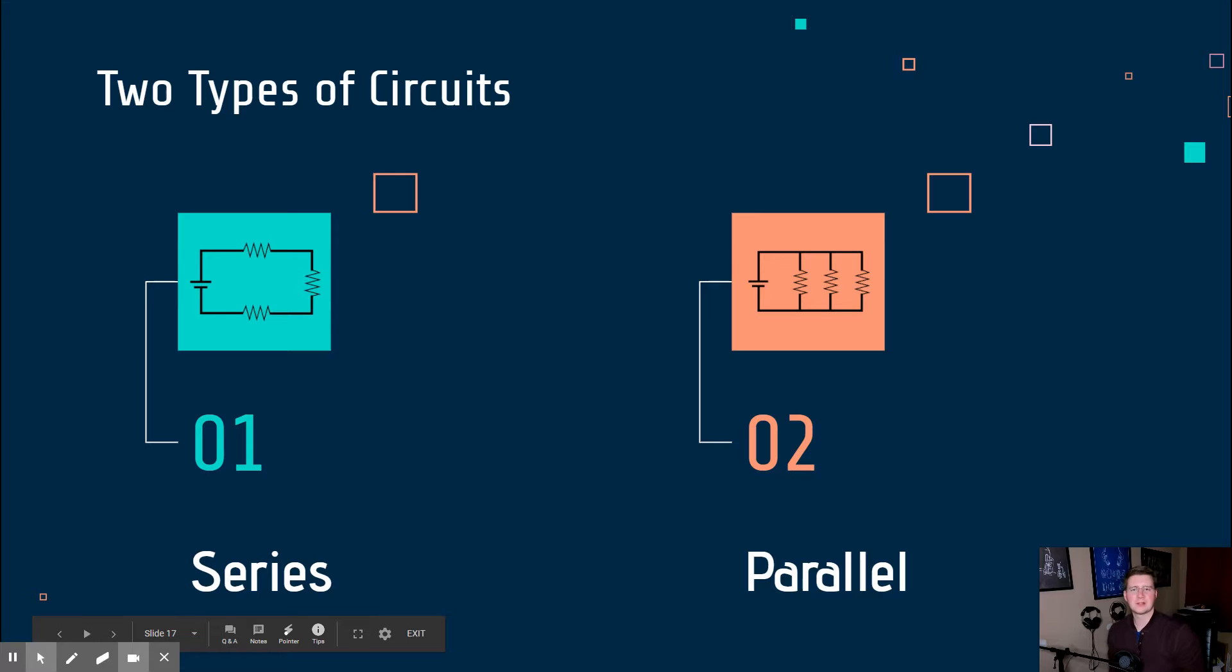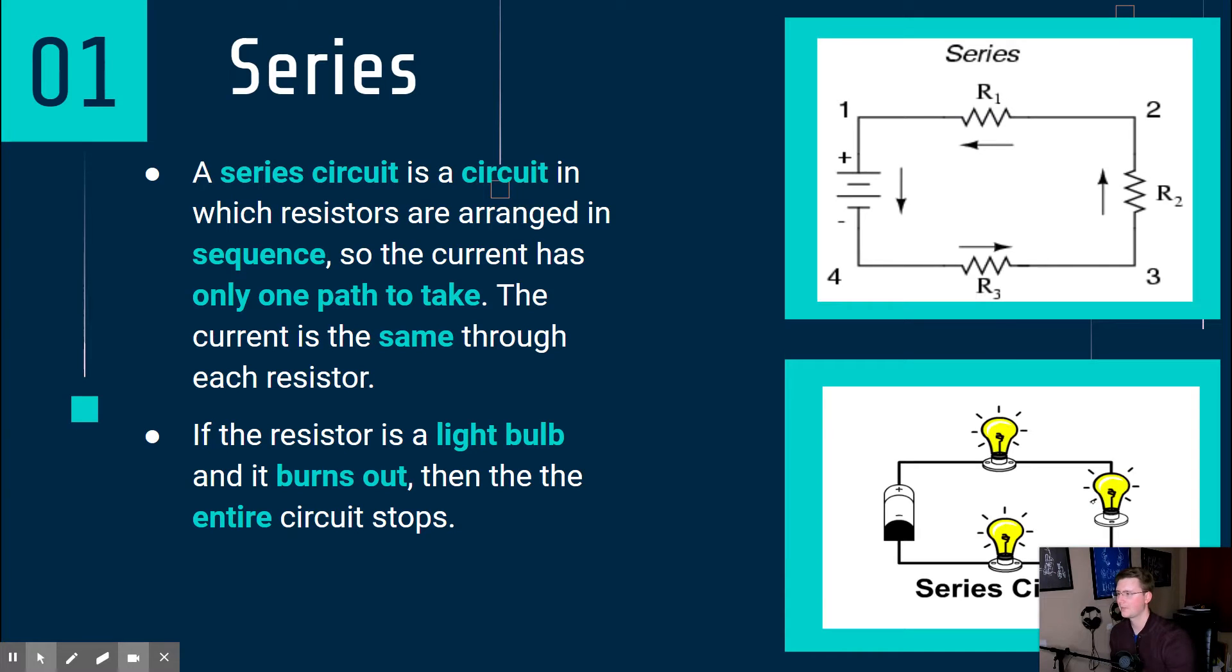So now that we have that basic understanding of a circuit and some of the pieces that go into it, let's talk about how they can actually be arranged. And so it's going to be a series and a parallel circuit. Those are going to be the two types of circuits that we're going to focus on here today. So the first one is a series circuit. A series circuit is a circuit in which resistors are arranged in sequence, so the current has only one path to take. The current is the same through each resistor. So you can see an example of a series circuit on the right, in which we have our battery. And then we have our current flowing counterclockwise, based off these arrows.